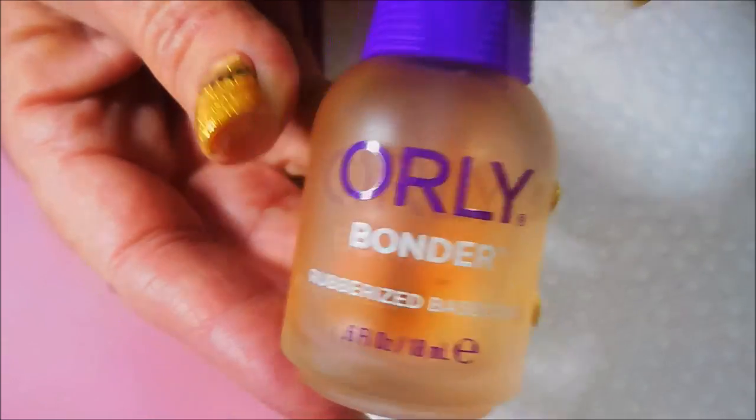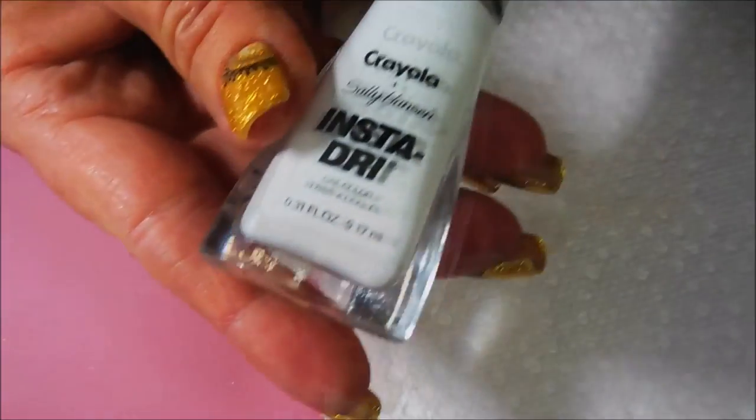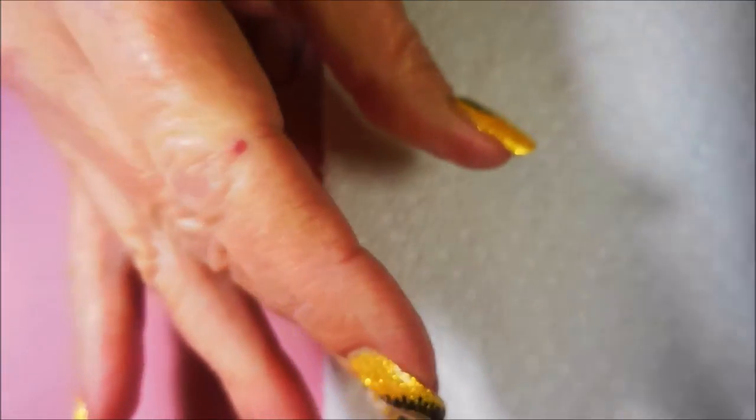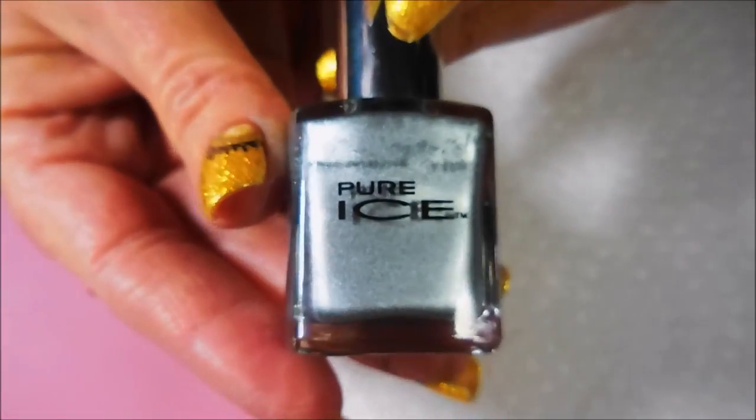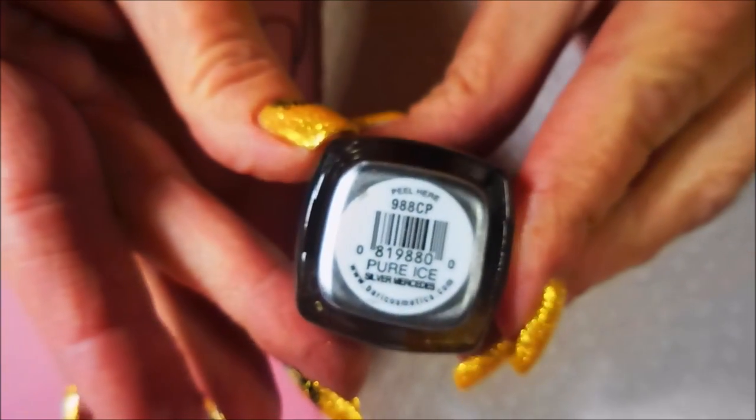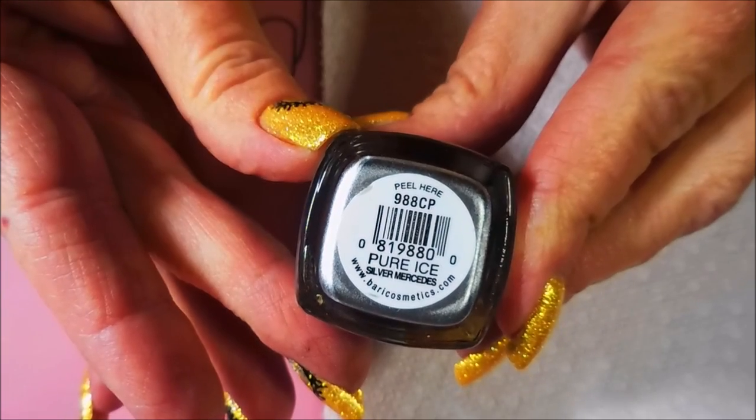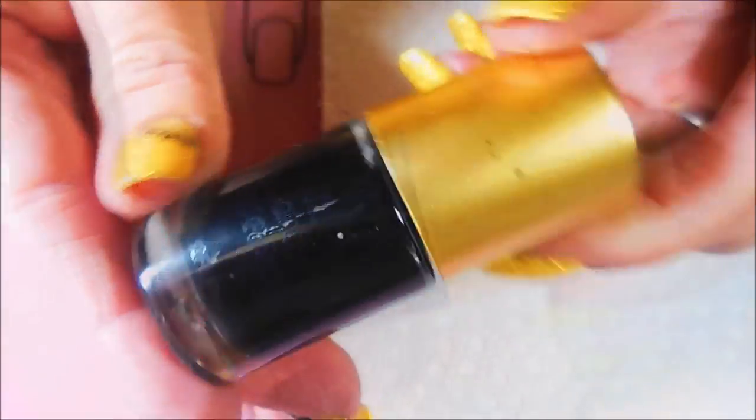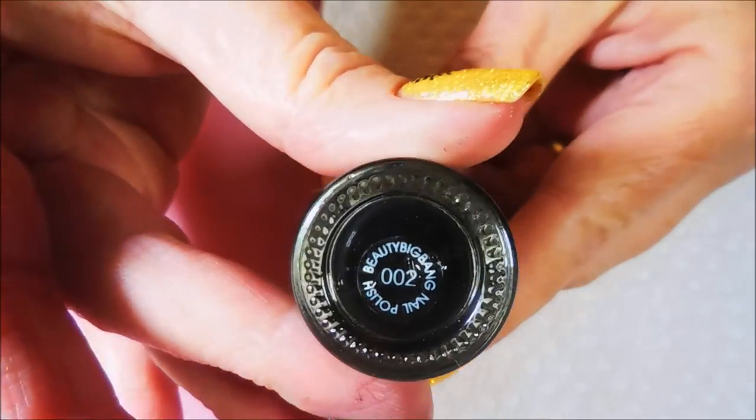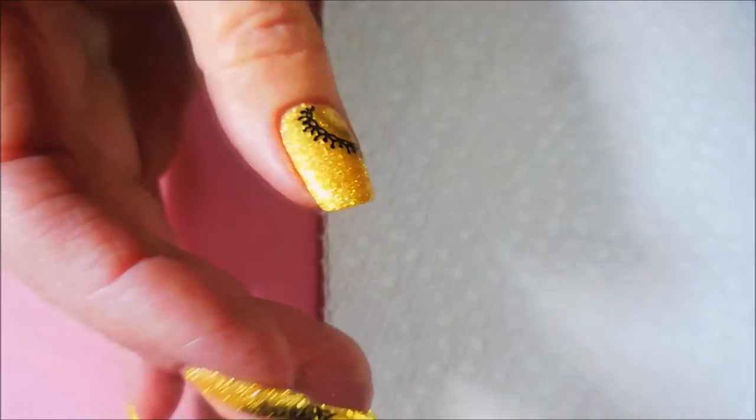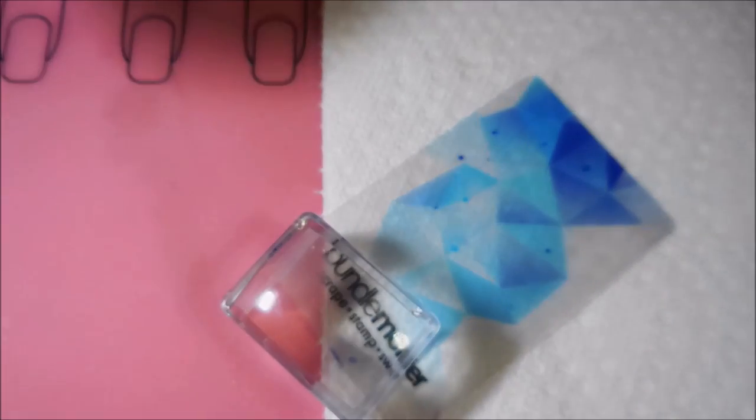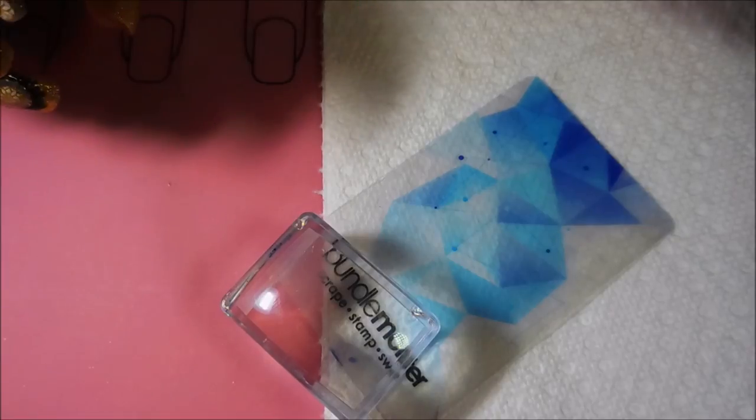The polishes I'll be stamping with today are this Crayola Sally Hansen Insta-Dry in White, and then Pure Ice in Silver Mercedes. Those are both non-stamping polishes. Then the one stamping polish I'll be using is from Beauty Big Bang, number 002, their black stamping polish. I'm going to be using my Bundle Monster scraper and my little rectangular stamper. I'm going to get some lights adjusted and I'll be right back.